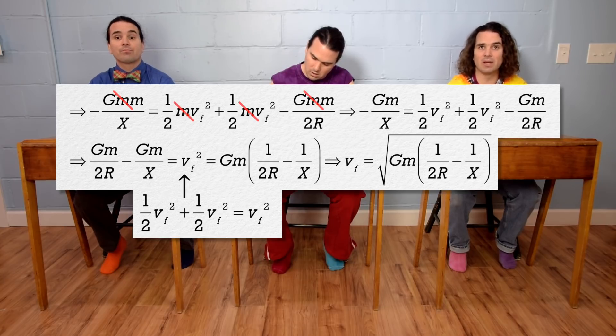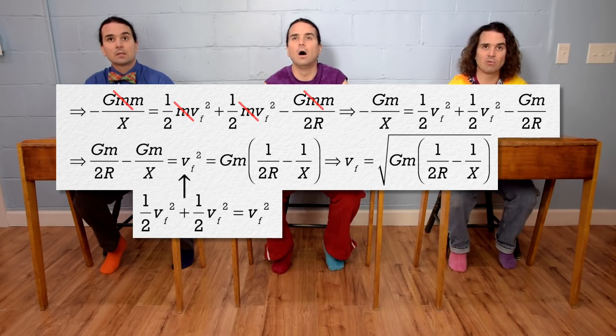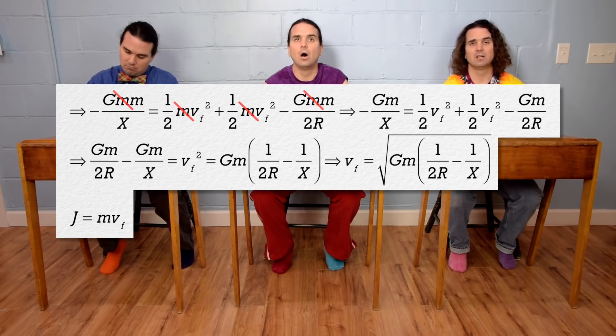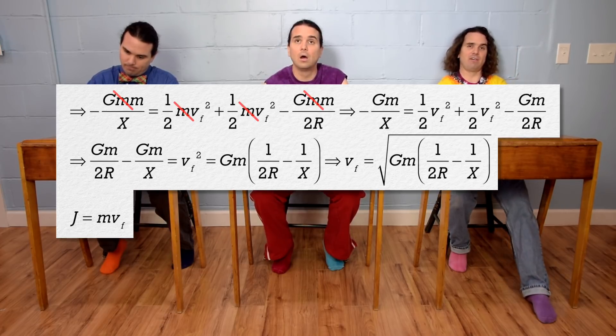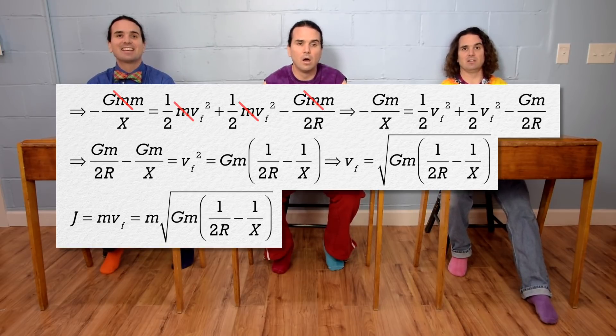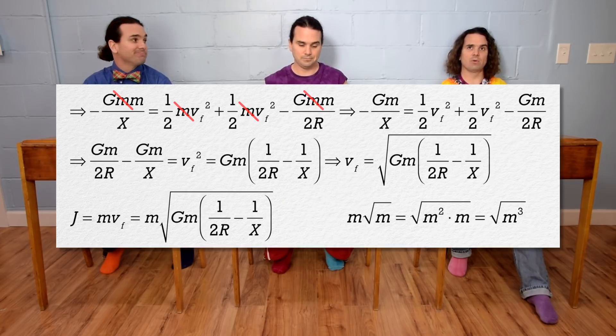And we might as well go all the way back to what we are actually solving for in this problem, the magnitude of the impulse delivered to each sphere. All we need to do is substitute in the final velocity. Once we have done that, you can see we need to bring mass under the square root.